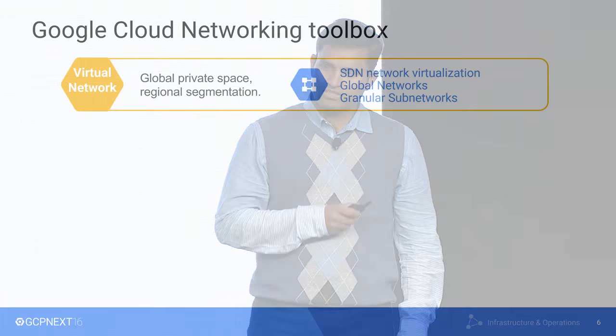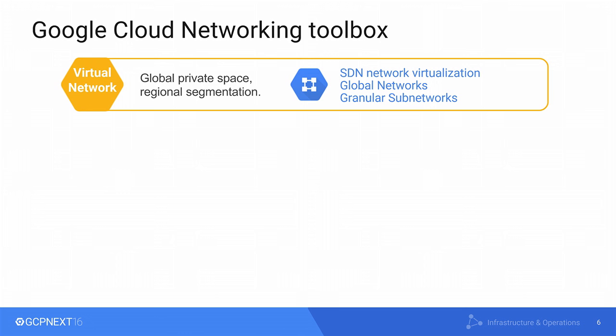Let's look at what different cloud networking tools and functions are available. We categorize them, after listening to you, into four different categories. The fundamental first building block is our virtual networks. You can create virtual networks, virtual machines, and containers across the globe, crossing different regions in a single API. Last year, we released more granular sub-networks. You can group a set of IP addresses, VMs, or containers into a sub-granular group by zone or by region.